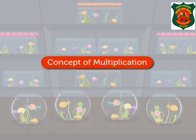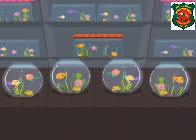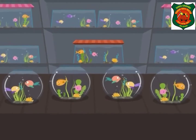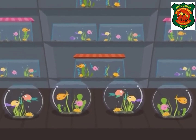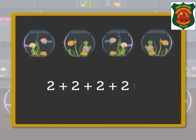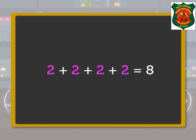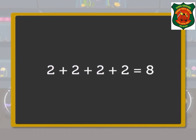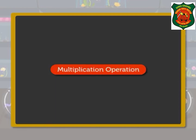With the help of this little fish — there are four fish bowls, there are two fish in each bowl. To get the total number of fish, we add the number of fish in all of the bowls: two plus two plus two plus two is equal to eight. There are eight fish in all. Here we repeatedly added two, four times. This is called a multiplication operation or multiplication fact. Multiplication is a repeated addition.